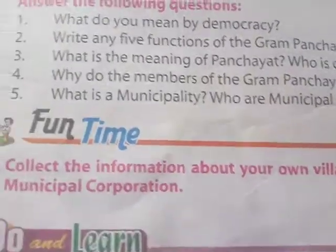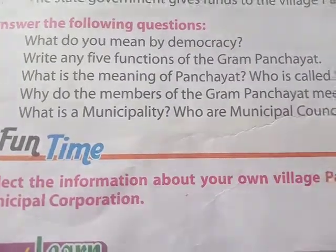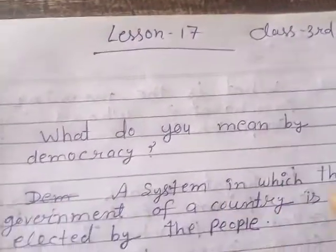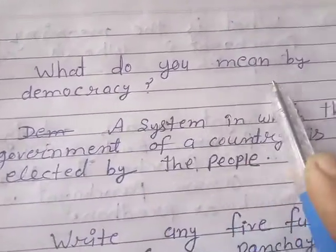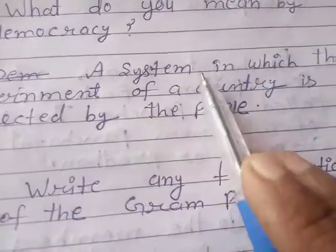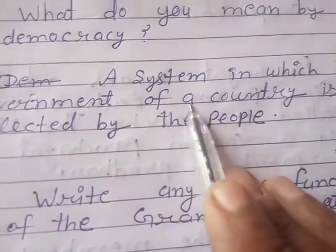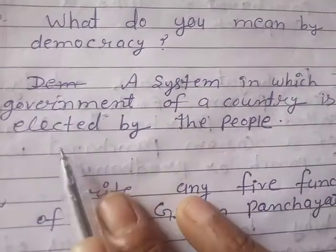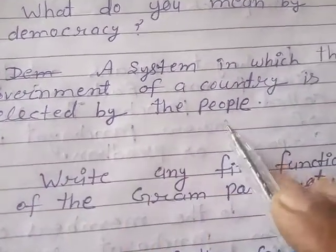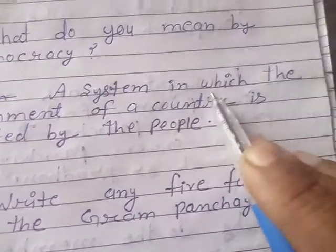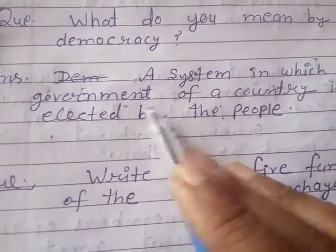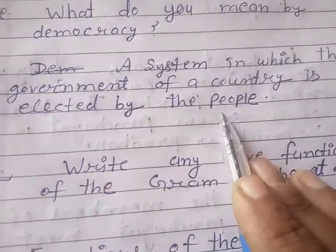Now answer the following questions. Question one: What do you mean by democracy? Answer: A system in which the government of a country is elected by the people.